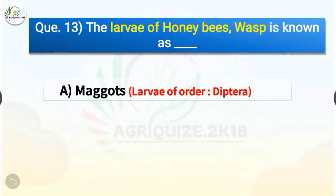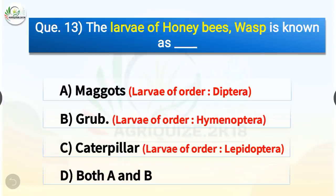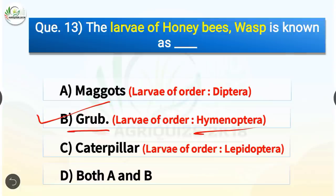Question number 13. The larvae of honeybees and wasps is known as what? The options are maggots, grub, caterpillar, or both A and B. The correct answer is option B, grub. The larvae of honeybees or wasps is known as grub. The larvae of order Hymenoptera are grubs, whereas larvae of order Diptera are called maggots, and larvae of order Lepidoptera are called caterpillars.